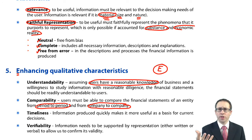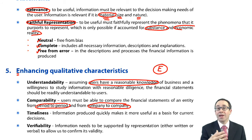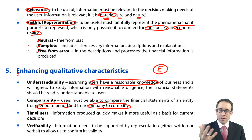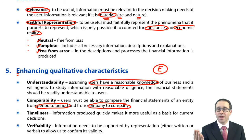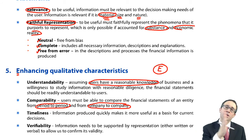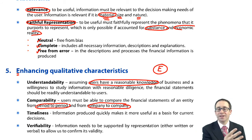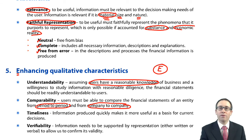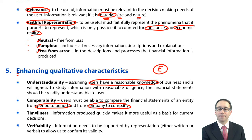If we have a choice with regards to accounting treatment for a similar item, that's going to lead to a lack of comparability between companies. For example, if one company capitalises interest on borrowings and another expenses it, that's going to have a big impact on profit and therefore reduce comparability.